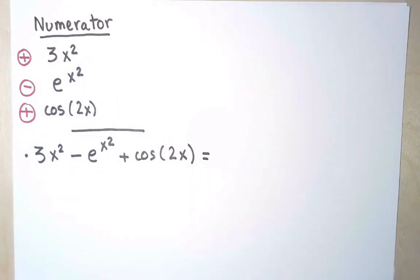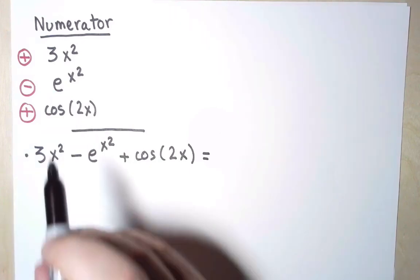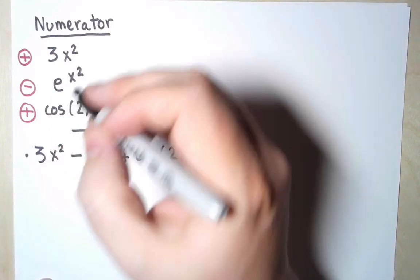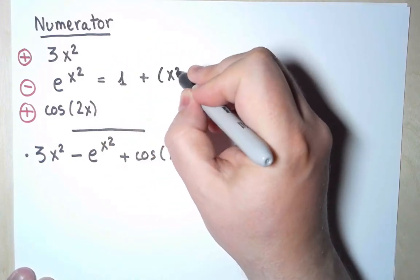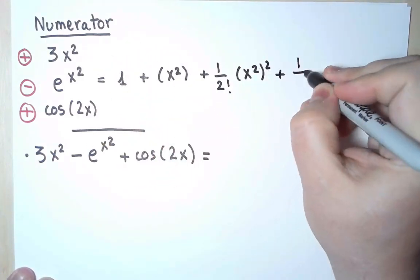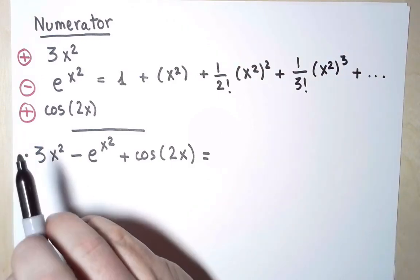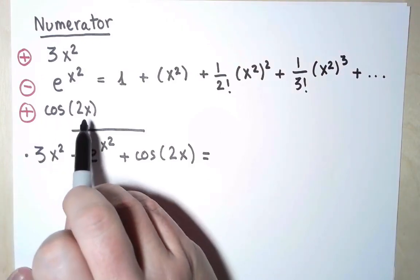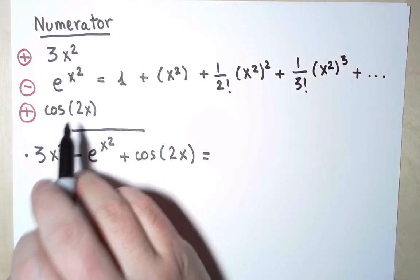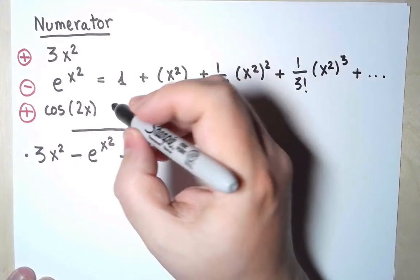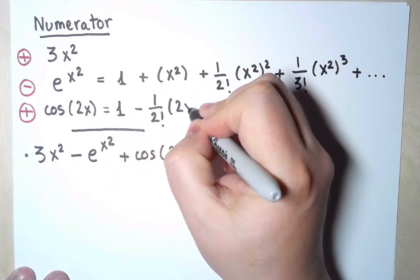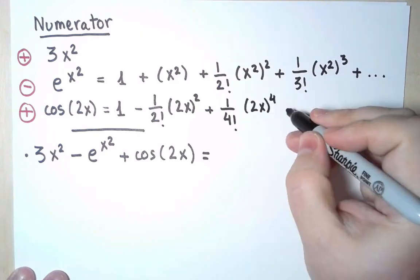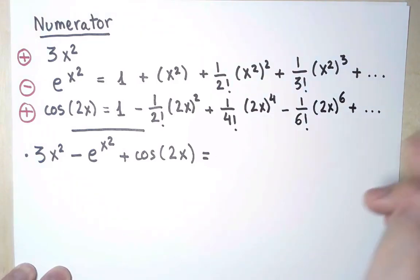There is nothing to do for 3x². It's already a monomial. I know how to write e^x as a Maclaurin series, but I'm going to use x² instead of x as the variable. Here are the first few terms. Similarly, I know how to write cos as a Maclaurin series, but I need to use 2x instead of x as the argument. Here are the first few terms. And hopefully they are enough.